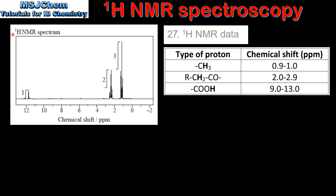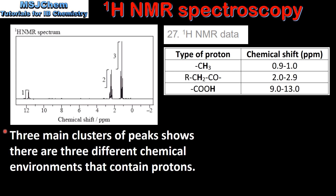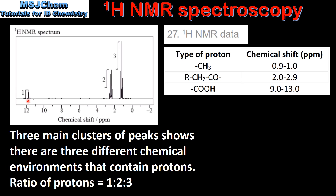Finally we look at the H1NMR spectrum using table 27 of the data booklet. As we can see from the spectrum there are three main clusters of peaks, which shows that there are three different chemical environments that contain protons. By looking at the integrated trace we can see that the ratio of protons in each chemical environment is 1 to 2 to 3.